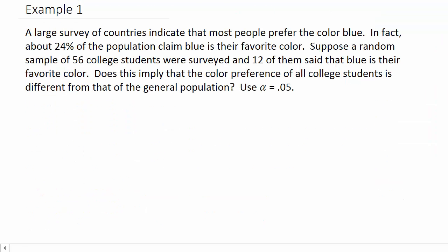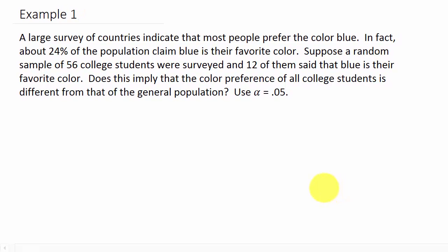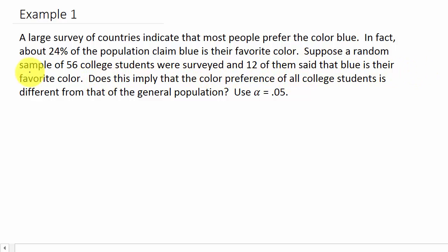Let's look at our example. A large survey of countries indicates that most people prefer the color blue — about 24% of the population claim blue is their favorite color. A random sample of 56 college students were surveyed and 12 of them said blue is their favorite color. Does this imply that the color preference of all college students is different from that of the general population? Use alpha equals 0.05.